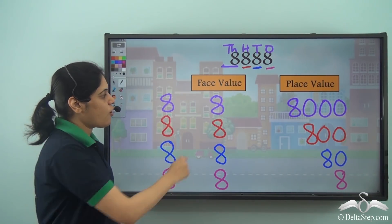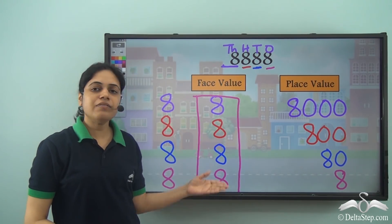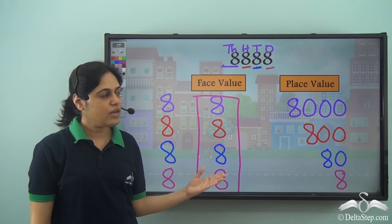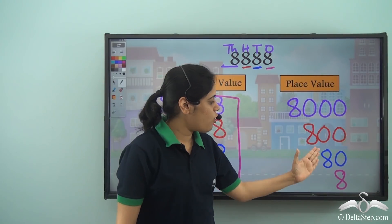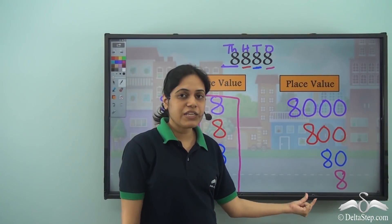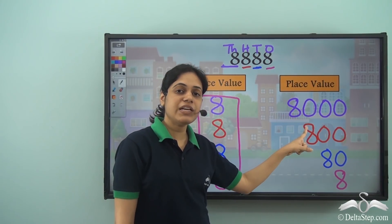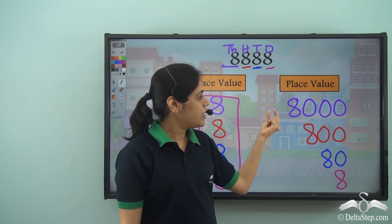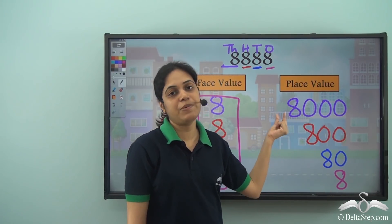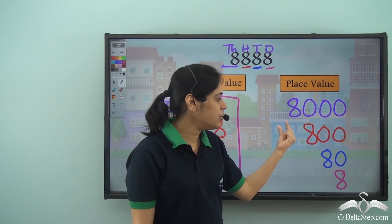The face value of each 8 is the same. It doesn't matter where the 8 is placed in the number — the face value is always 8. But the place value of each 8 is different. This 8 is 8 in the ones place, whereas this 8 in the thousands place is 8000. So it makes a lot of difference where we place this 8, because it changes the place value.